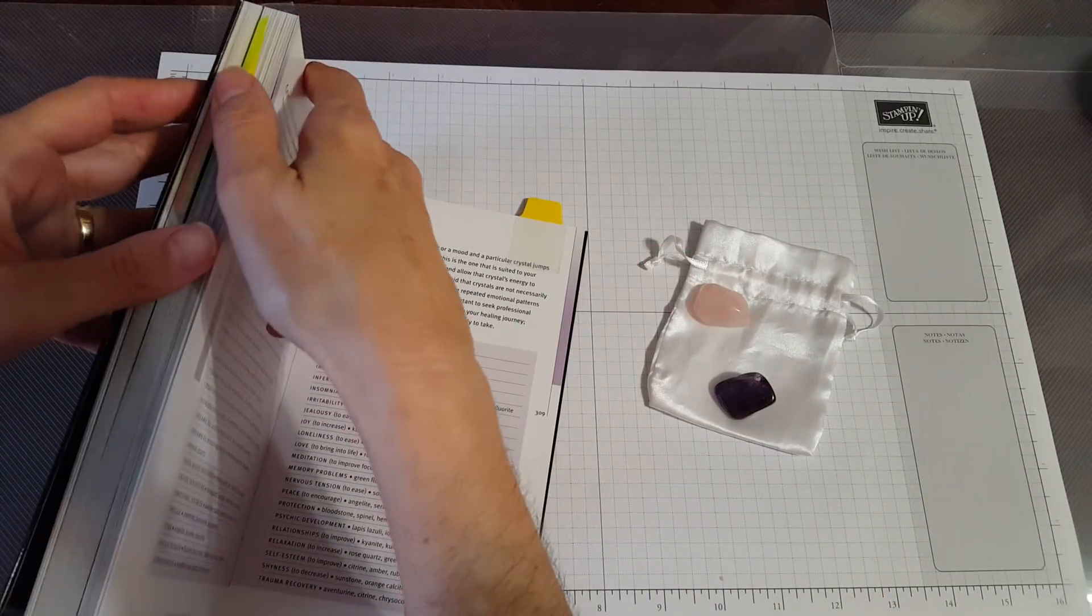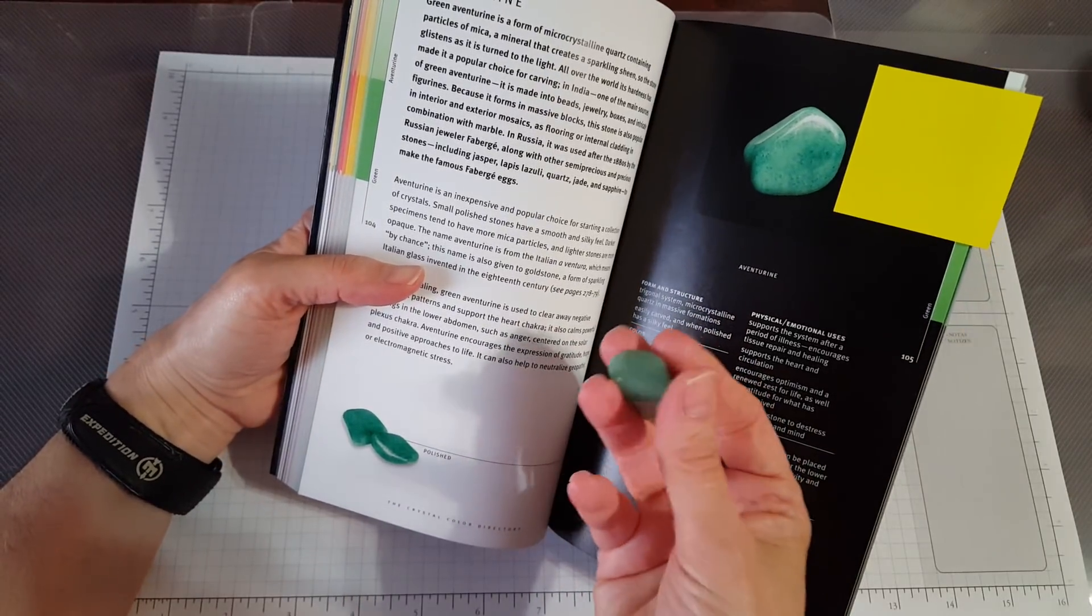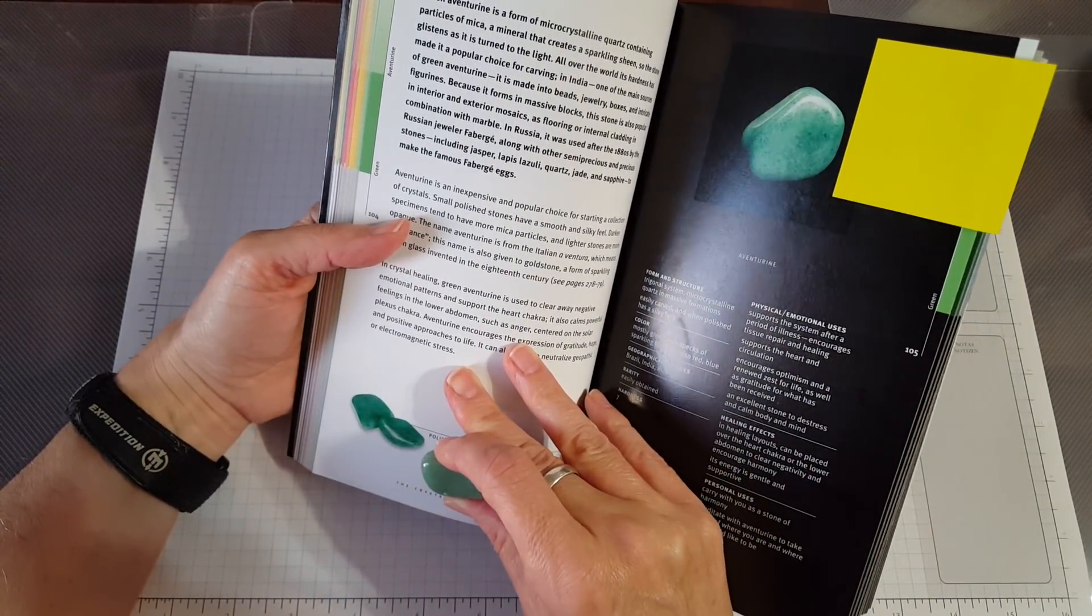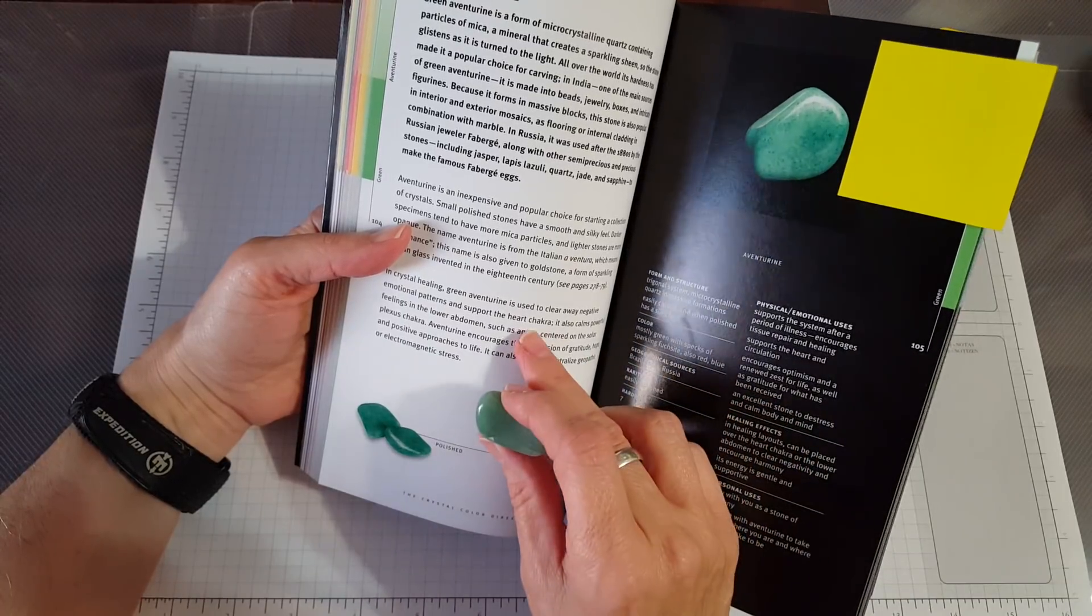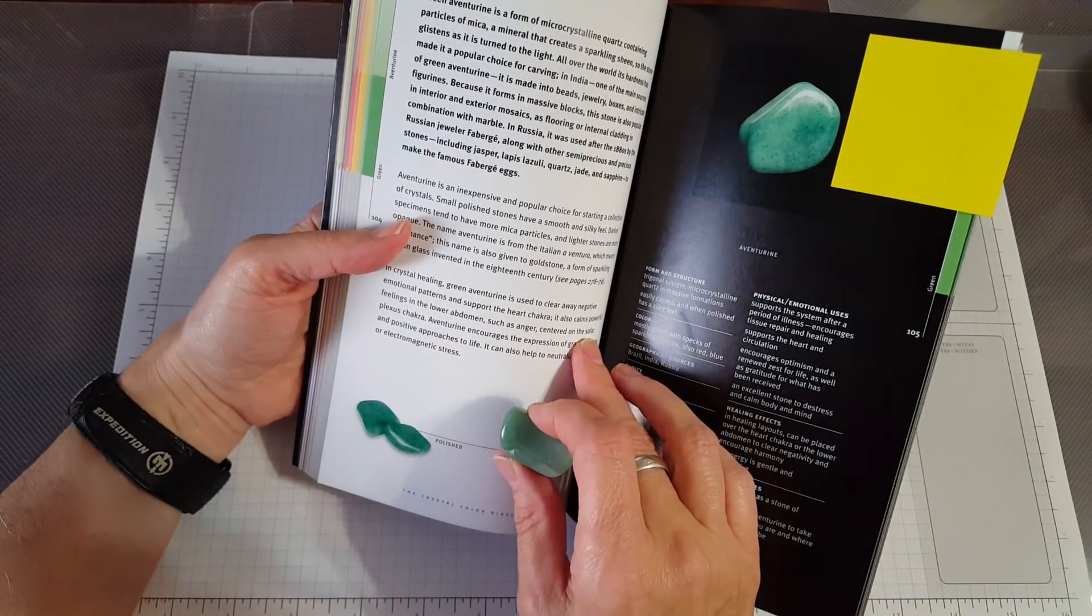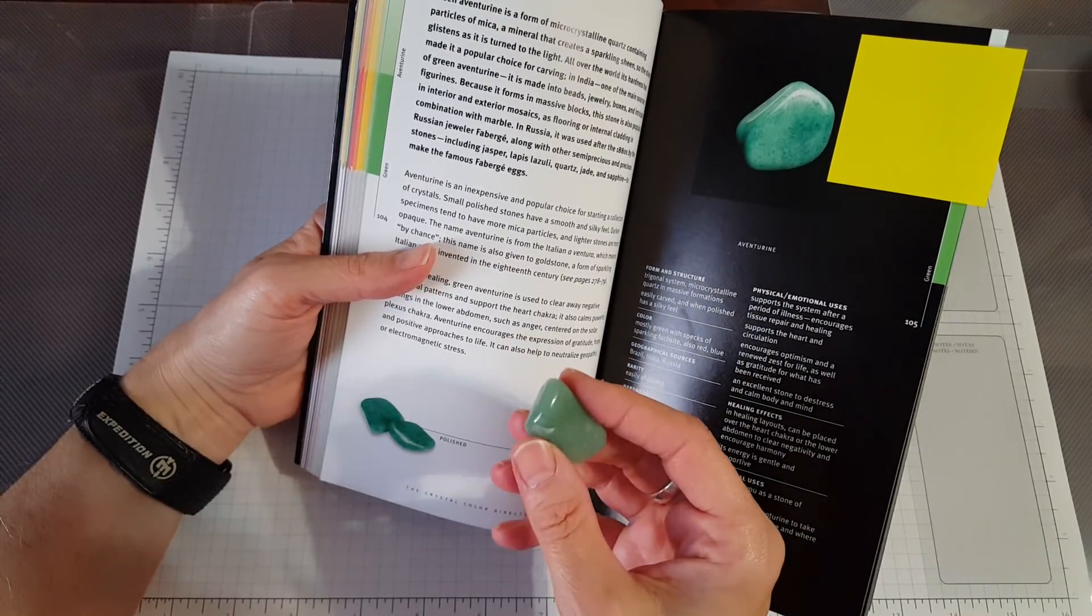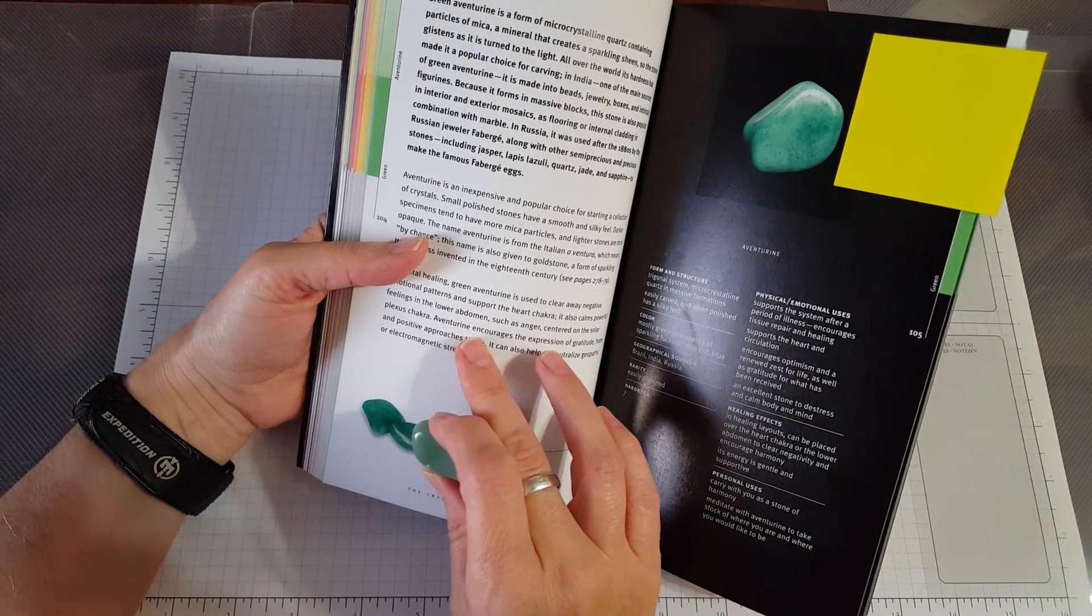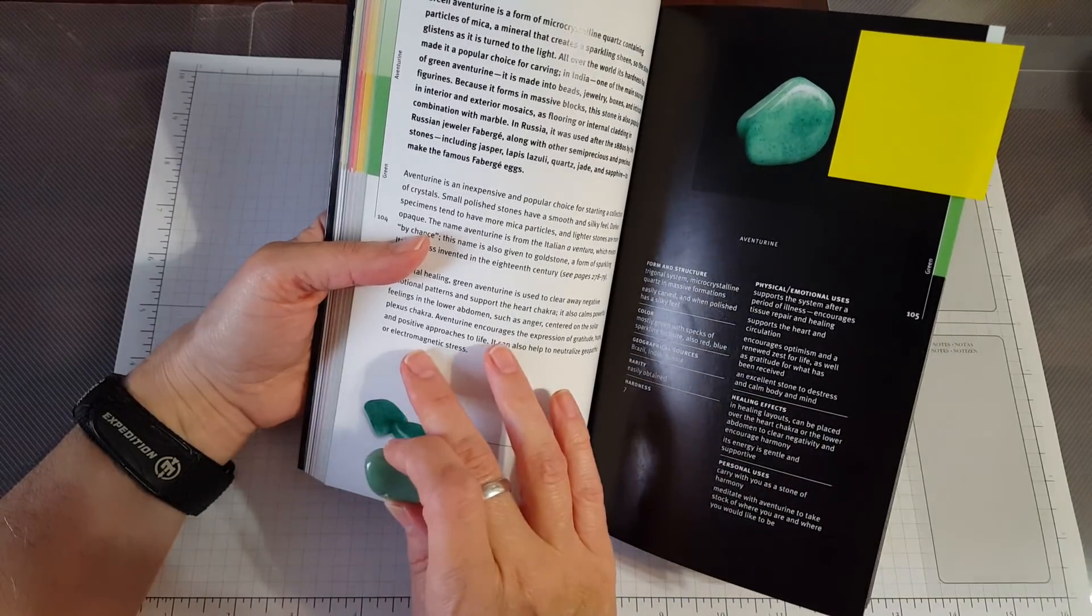But anyway, the one I was going to focus on for tonight is this one, the aventurine. This is a little sample of that and I just thought I would talk about this one because I haven't talked about this one yet. It says in crystal healing, green aventurine is used to clear away negative emotional patterns and support the heart chakra. It also calms powerful feelings in the lower abdomen such as anger centered on the solar plexus chakra. Well I didn't have anger I don't think, what I had was just this sinking feeling and worry, like gut instinct that oh she's really sick. She wasn't eating for two days and anyway I was just really...